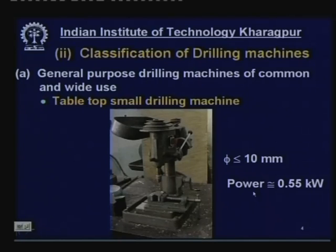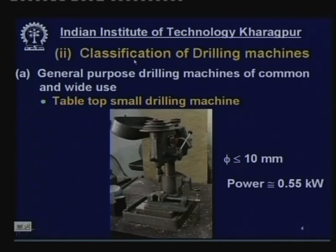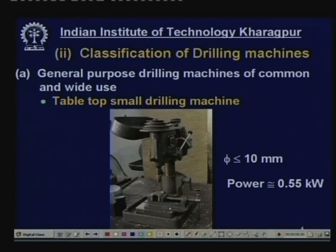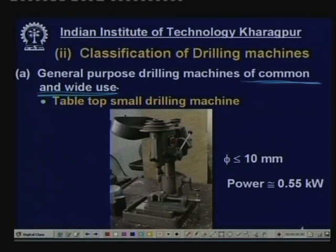Now the classification of drilling machines. Drilling machines normally produce through holes and basically straight holes, but even so there are many different types of drilling machines for different purposes, sizes, and shapes. Let us have a glance at the different types and then see their applications. We are talking about general purpose drilling machines of common use first, then those used for more specific applications.